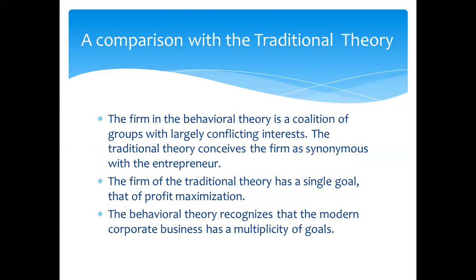A comparison with the traditional theory: in behavioural theory, a firm is a coalition of groups with large and conflicting interests, but in traditional theory there is only one entrepreneur with no coalition of different groups. The firm of traditional theory has only one goal, but in behavioural theory there are a number of goals equal to the number of conflicting groups — if there are ten conflicting groups, then there are ten goals, not only one.